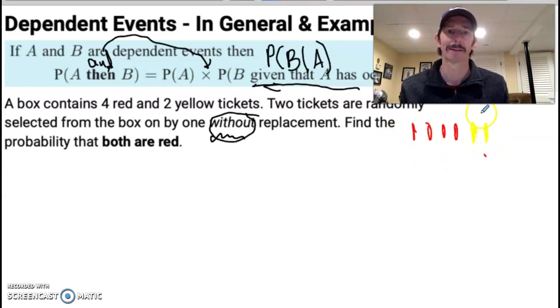So with replacement is more of an independent type of situation. Because as I put it back, I don't remember when I shuffle them up. I can't remember which one I took. The box or the bin doesn't know. But without replacement, I'm putting that one in my pocket. And so now it depends because there's not as many as there were to begin with. And the red one's already gone, so now there's fewer red, etc.